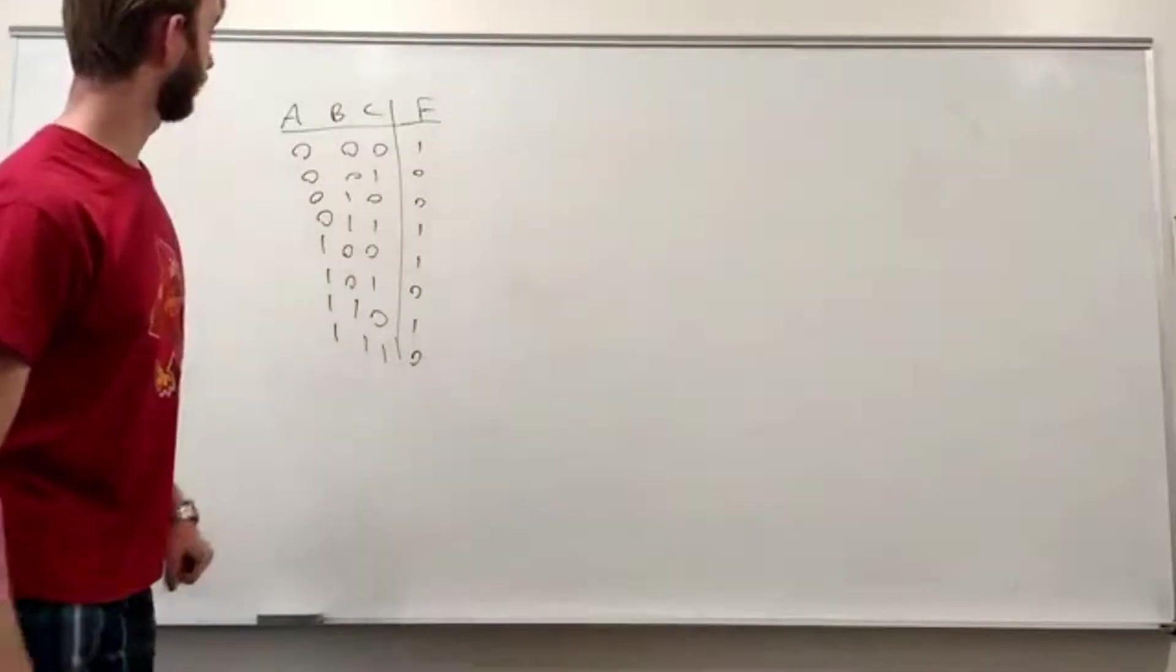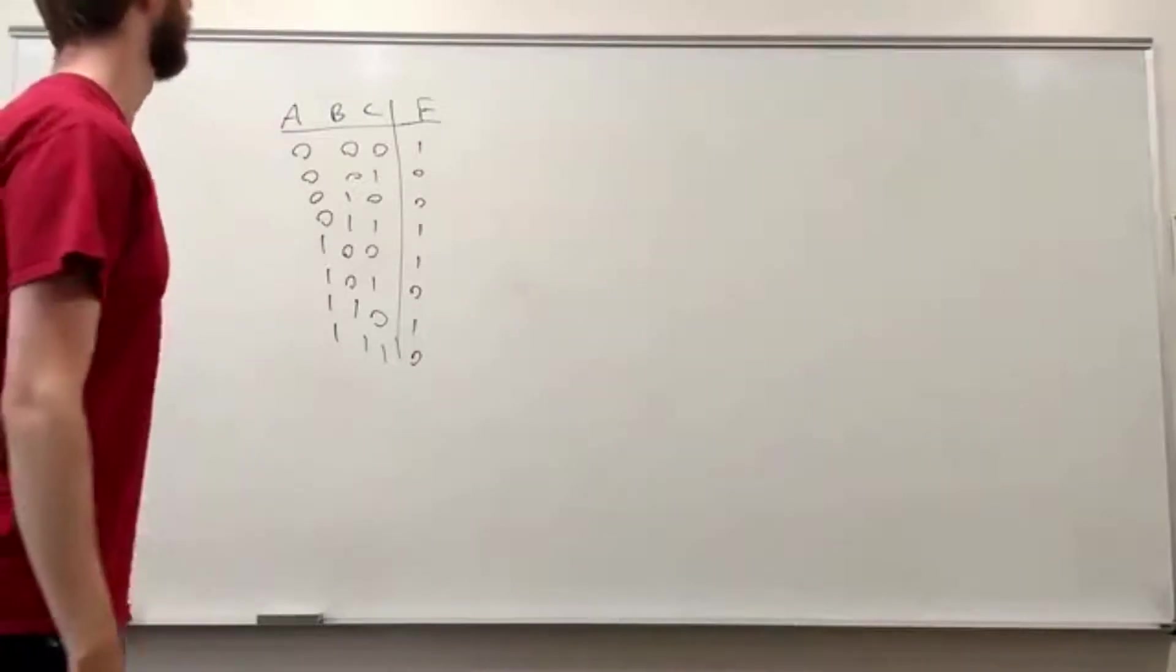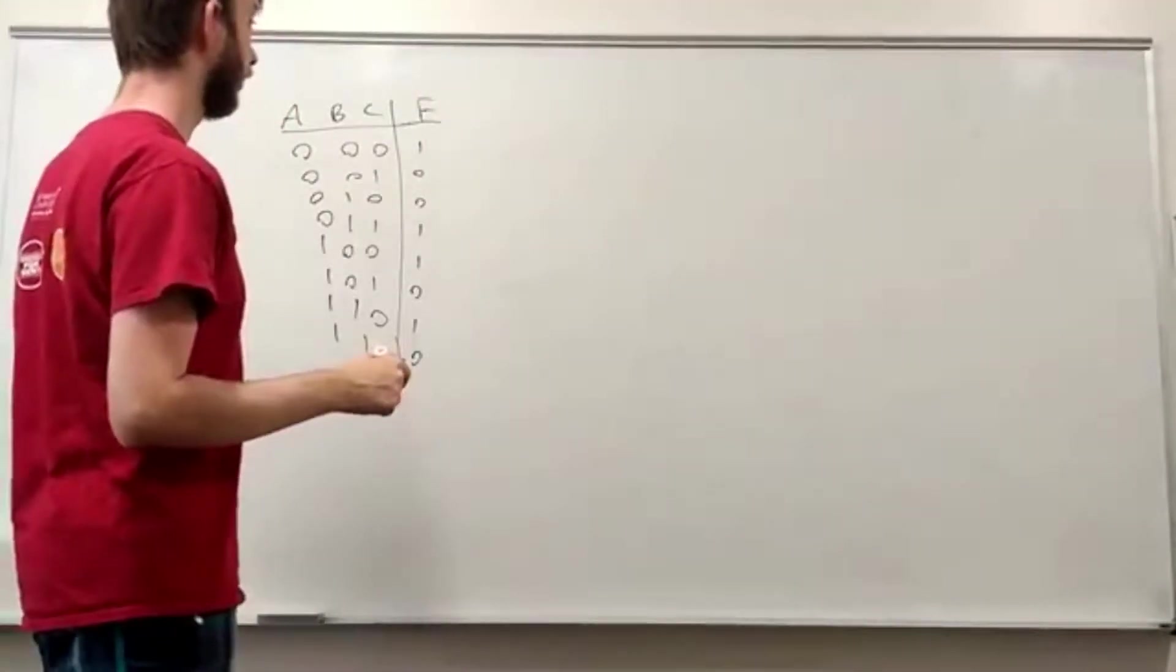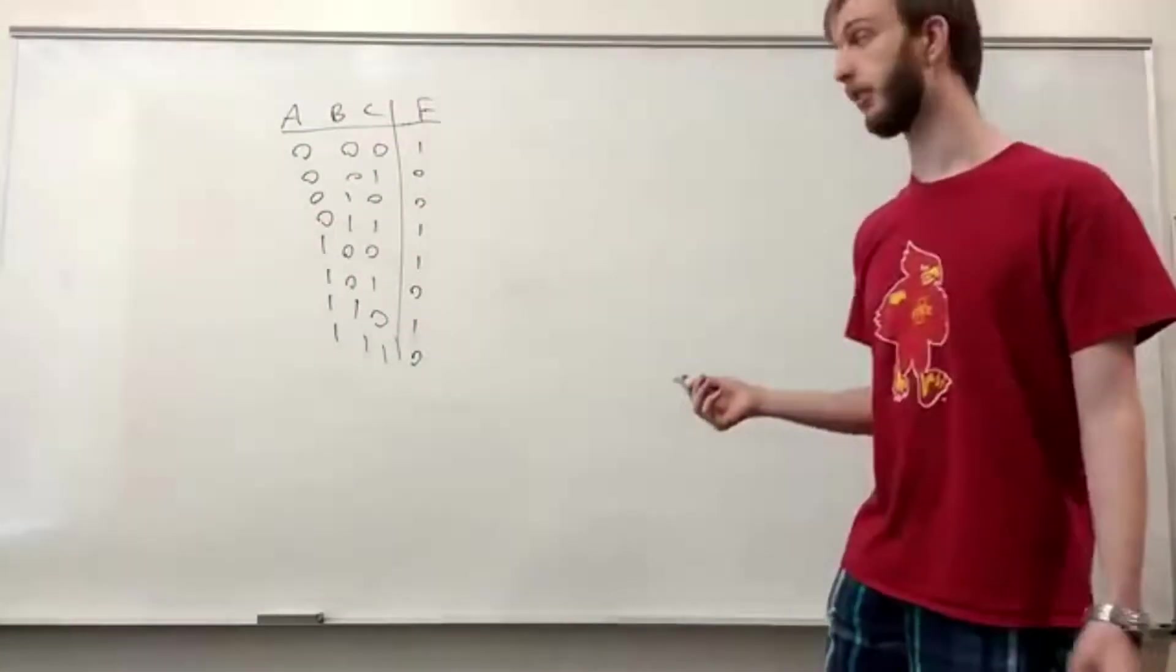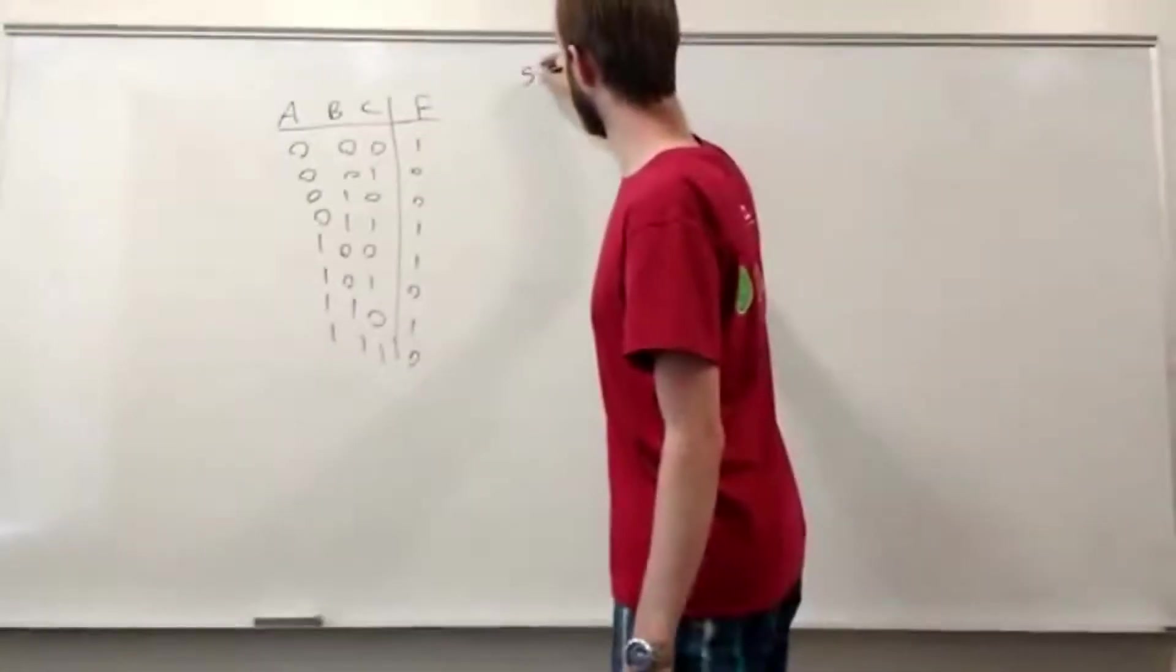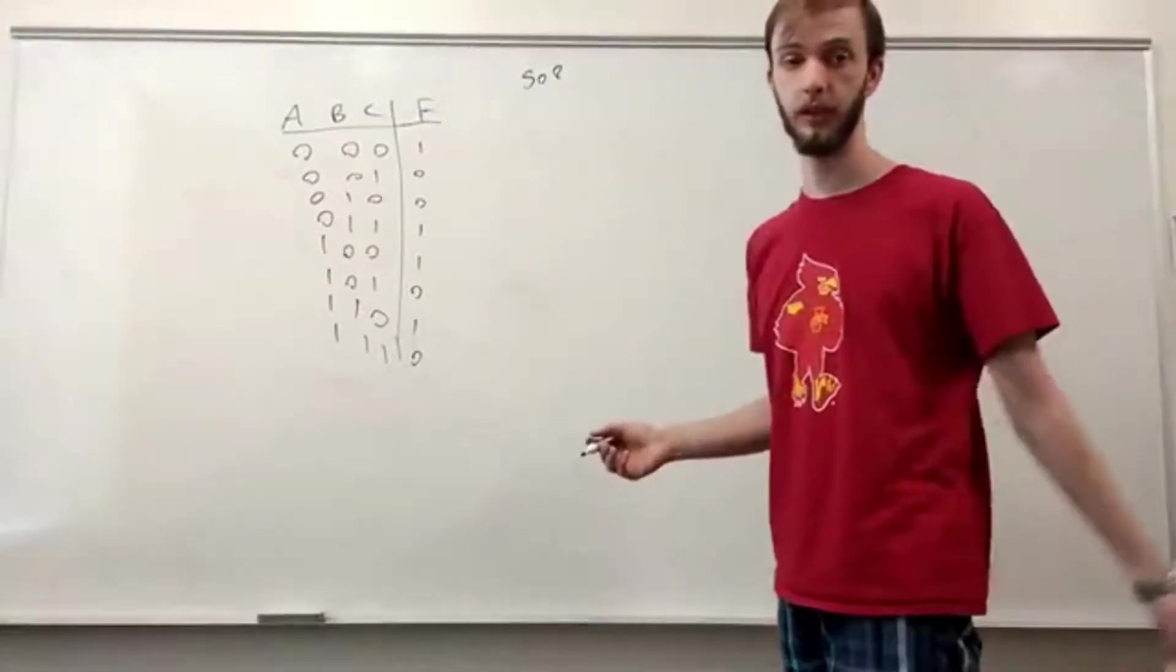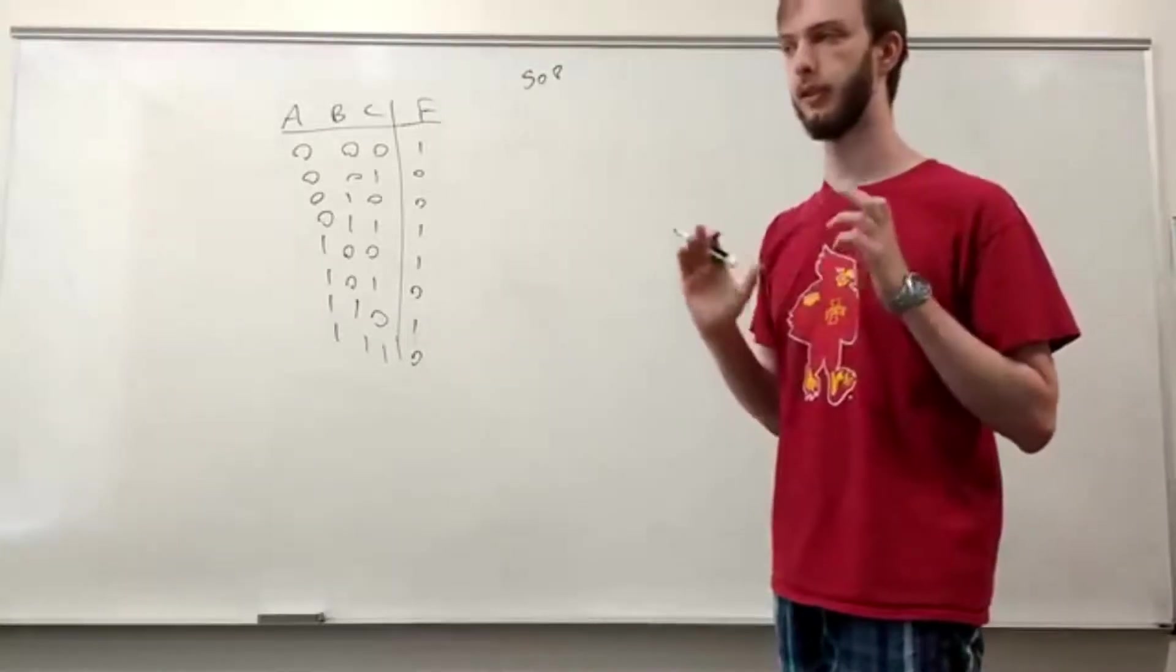So how are we going to find our logic circuit from this? The first way we're going to do this, and that's what we're doing today, is with what's called a sum of products synthesis. The reason we call it that is because an AND gate is considered to be a product and an OR gate is considered to be a sum.